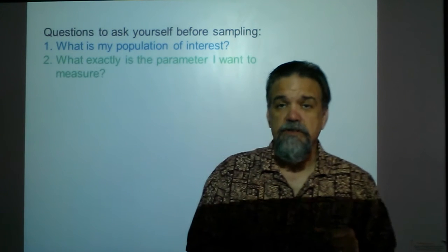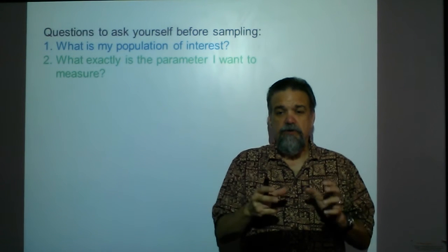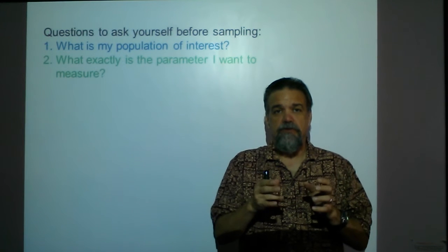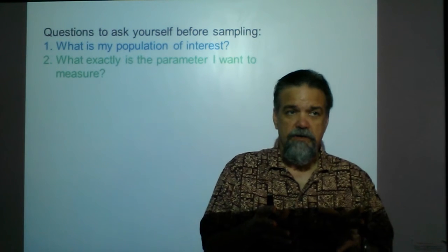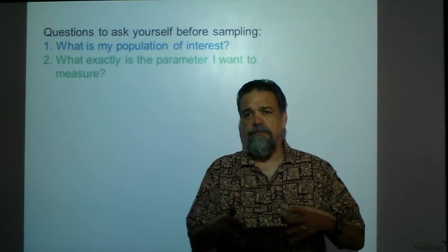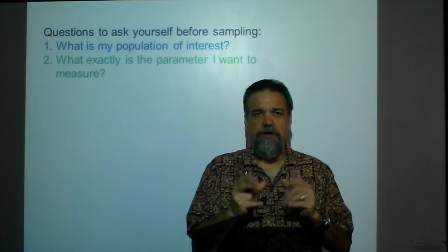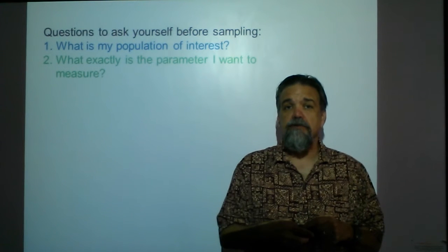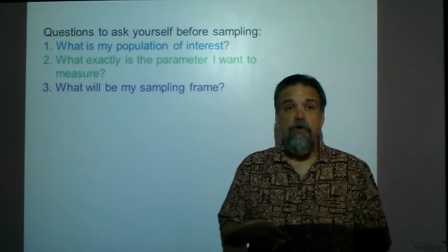The next question is: what exactly is the parameter I want to measure? The parameter I want is the proportion of those people who plan to vote for Bernie Sanders — not how many people respect him, like him, or are happy he's running, but how many actually plan to vote for him. It's really important to nail down those first two questions because it makes everything clearer going forward.